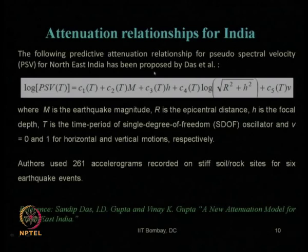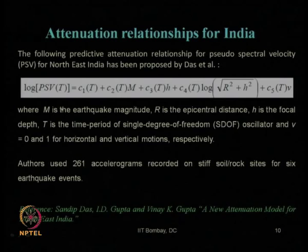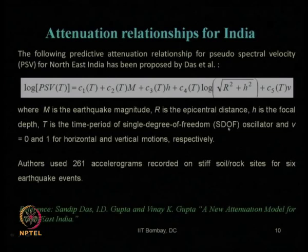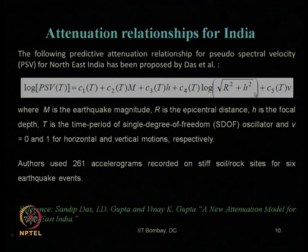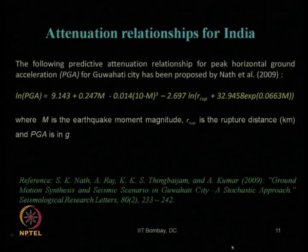We also saw the attenuation relationship proposed by Das et al. for pseudo spectral velocity — we had already derived what pseudo spectral velocity is, including its complete derivation. They proposed the relationship in terms of moment magnitude, epicentral distance, focal depth, and time period based on a single-degree-of-freedom oscillator system, through which spectral acceleration or spectral velocity response is obtained. About 261 accelerograms recorded on stiff soil and rock sites for 6 earthquake events were used as total data points.